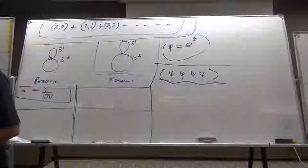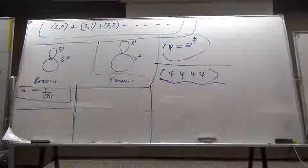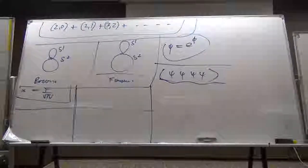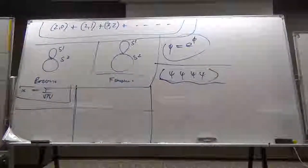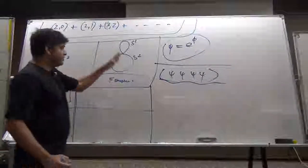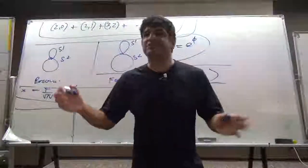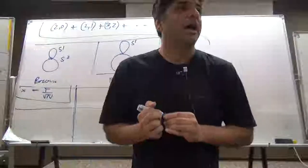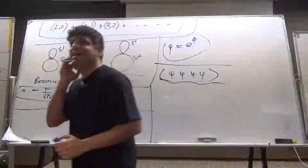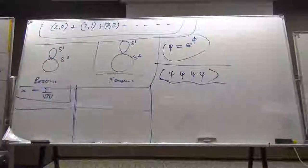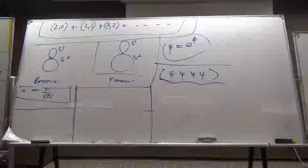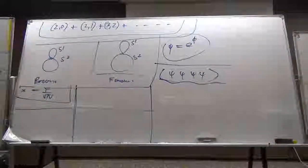Any interesting observable that you can compute should be computed to all orders in a coupling, just to see if there are any surprises. So motivated by these two motivations, I'm now going to try to, in both these theories, compute the S-matrices. I'm going to try to compute the S-matrices in two-to-two scattering. Any questions or comments before we proceed?